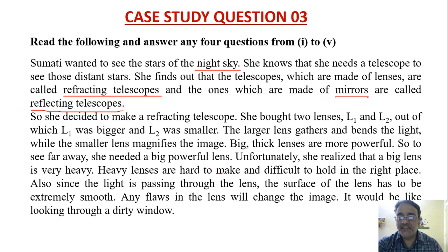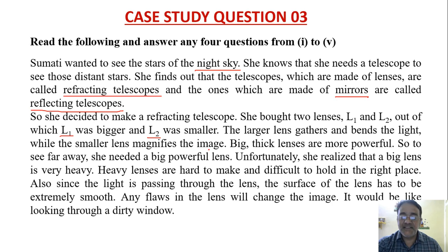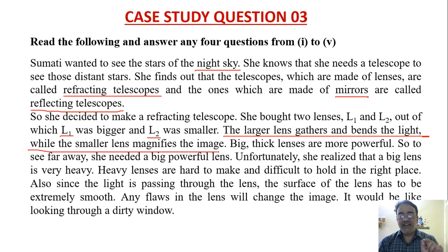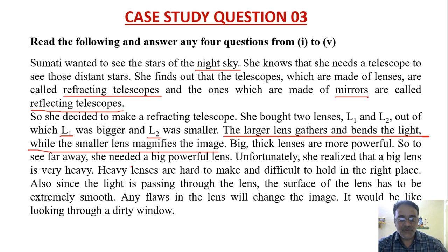She bought two lenses L1 and L2, out of which L1 was bigger and L2 was smaller. The larger lens gathers and bends the light, while the smaller lens magnifies the image — this is the clue. Big thick lenses are more powerful, so to see far away she needed big powerful lenses.